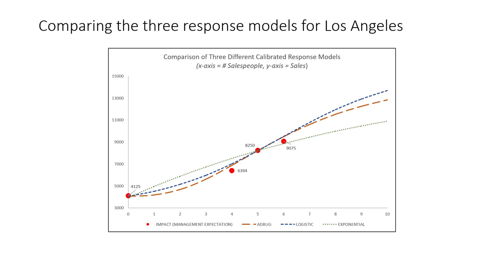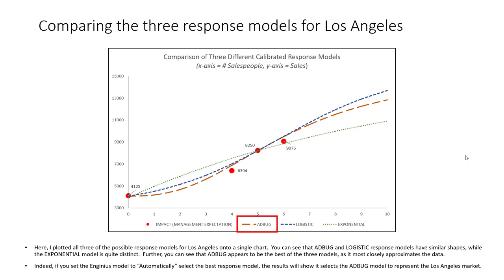I took all three potential response models — all again for Los Angeles across four data points — and plotted them on top of one another in Excel. By looking at all three hypothetical choices at once, it's easier to see which is the best choice for Los Angeles. Without doing anything fancy, a simple eyeball check shows that the thick dotted orange adbug line has the closest fit, indicating it's the best choice for Los Angeles, though the logistic curve fits quite closely as well.